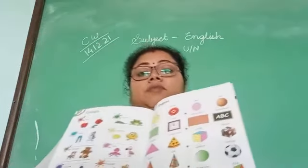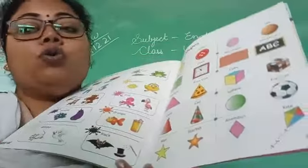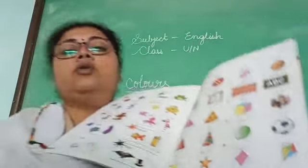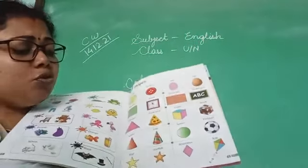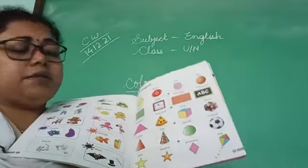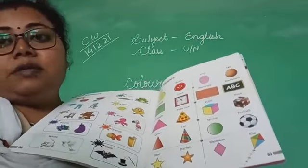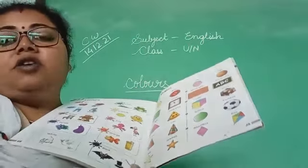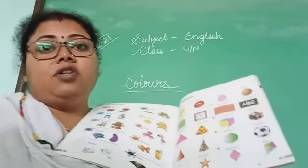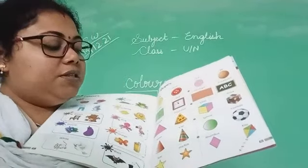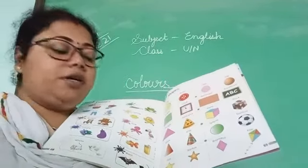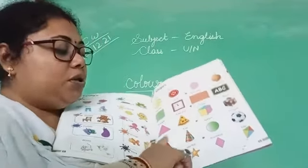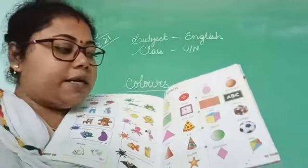Next come — this one is not a triangle. This one is cone. What shape is it? Cone. Cone example is cap. You have seen birthday caps, party caps. So this is known as cap. Cone — cap.